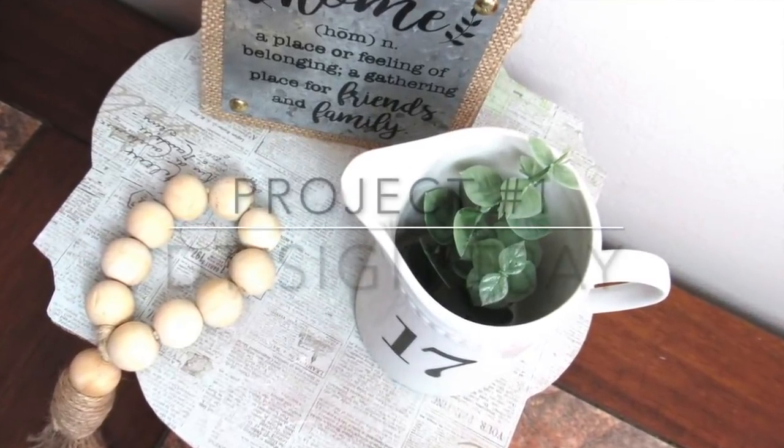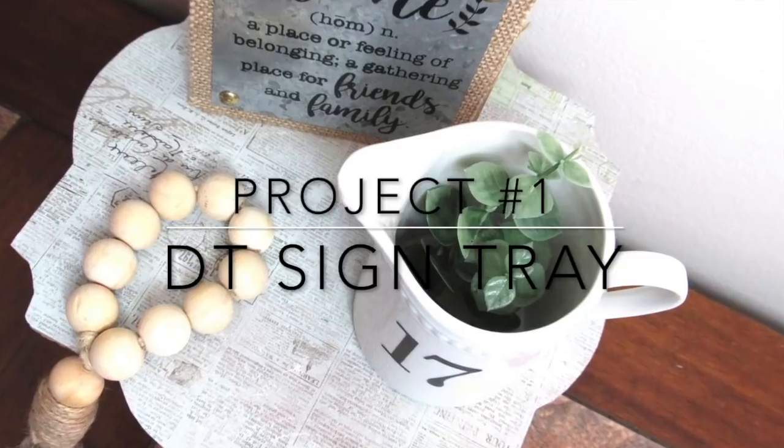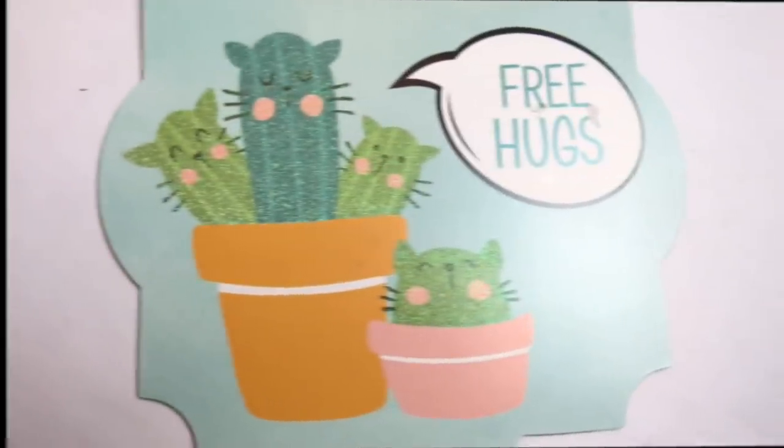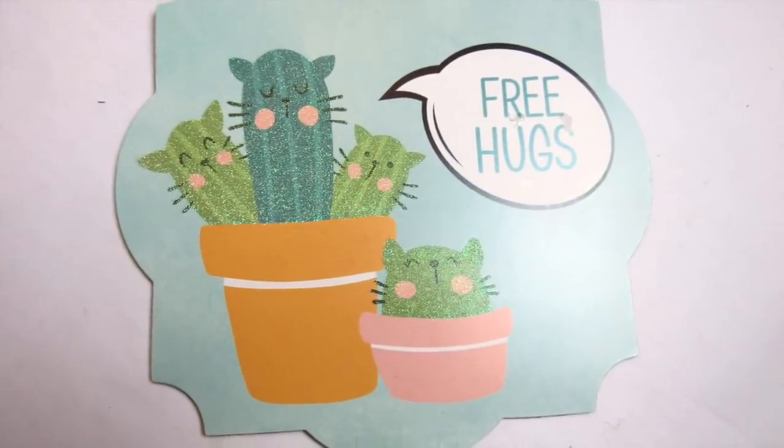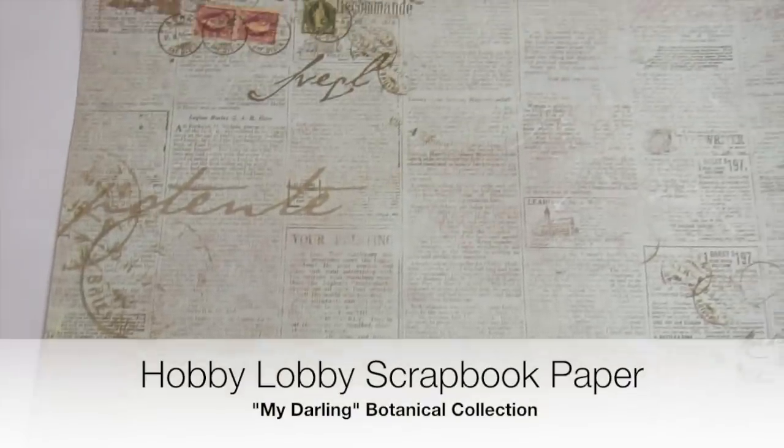For the first project I'm going to show you how to take a Dollar Tree sign and turn it into a tray. For this project we'll be using this sign from Dollar Tree, any sign will do, and this really pretty scrapbook paper from Hobby Lobby.